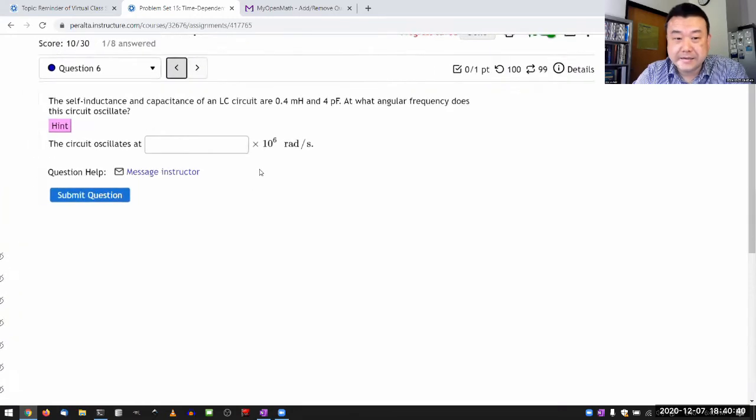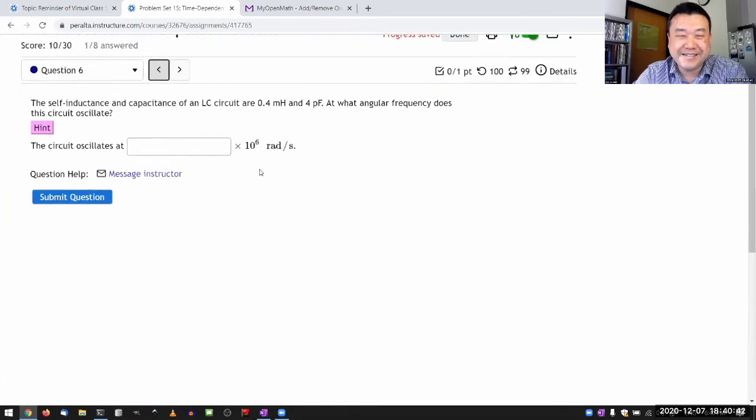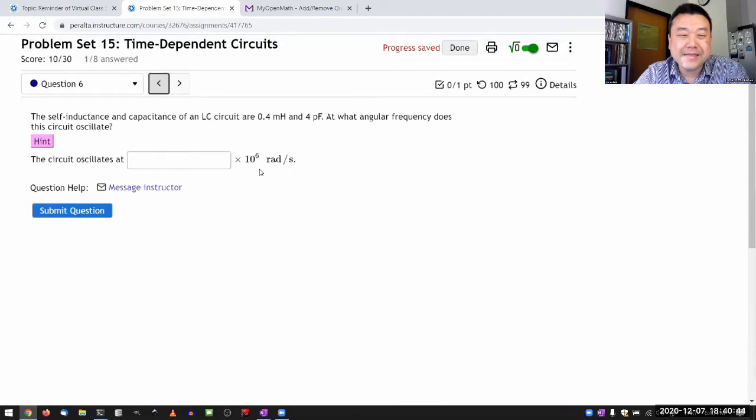Question six is probably the easiest possible question that one can ask about LC circuits, especially if you are allowed to look at formulas.